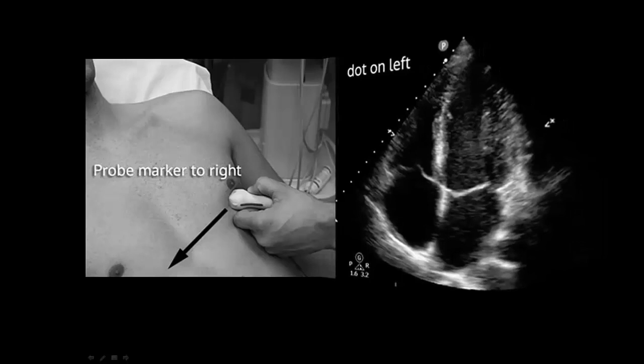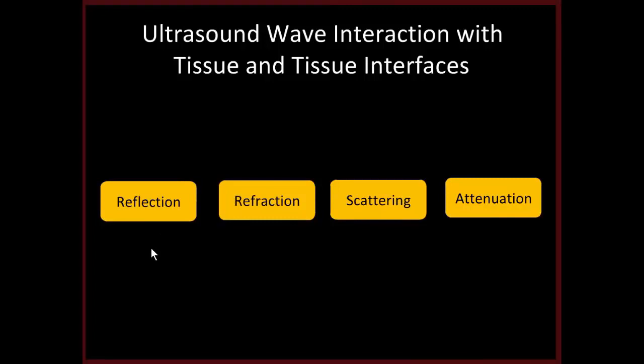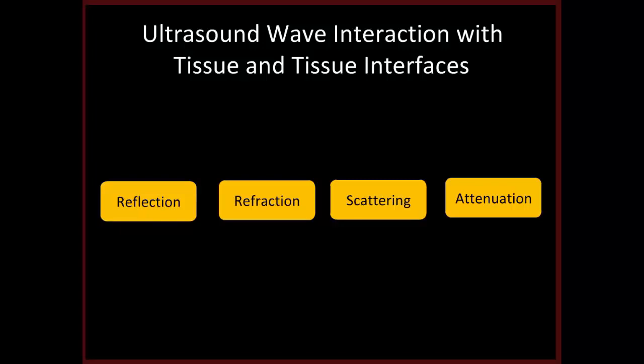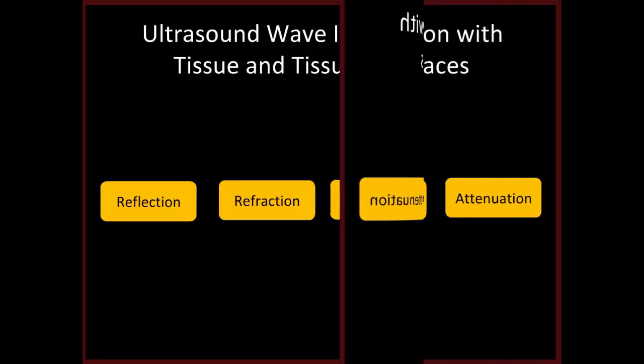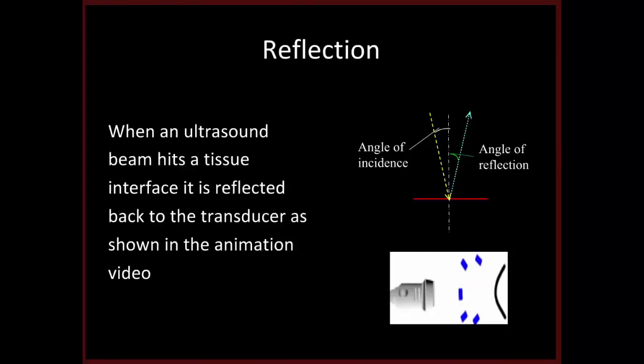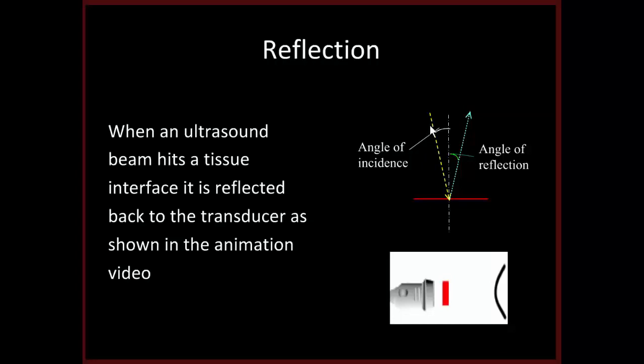There are four main interactions of an ultrasound wave with tissue or tissue interfaces: reflection, refraction, scattering, and attenuation. Reflection describes the phenomenon when an ultrasound beam hits a tissue interface and is reflected back to the transducer. The angle of incidence is going to be the same as the angle of reflection. To get the best possible image, you have to keep the transducer perpendicular to the object you want to image — that way you have the maximum amount of ultrasound beams reflected back to the transducer.